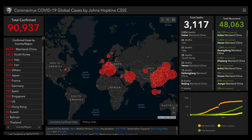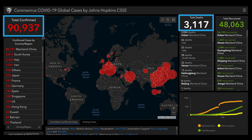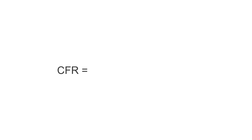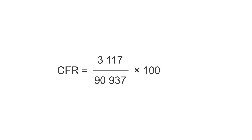Let's go to the Johns Hopkins coronavirus map. There we have the total number of confirmed cases, total deaths, and total cases recovered. Please note that these are the data as of March 3rd, 2020. You could calculate a case fatality rate by dividing the number of deaths by the number of total confirmed cases, multiply by 100 to receive a case fatality rate of 3.4%. But this way of doing it is slightly erroneous.